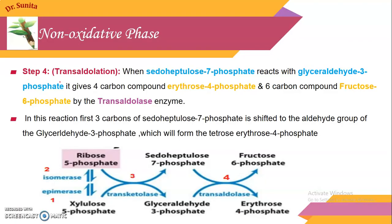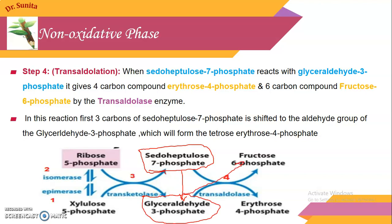In step 4, there is a transaldolation reaction. In transaldolation, the 3 carbons of sedoheptulose-7-phosphate bind to the aldehyde group of glyceraldehyde-3-phosphate, forming fructose-6-phosphate, while the remaining part gives erythrose-4-phosphate. So two compounds are formed by this transaldolation reaction catalyzed by transaldolase: fructose-6-phosphate and erythrose-4-phosphate.